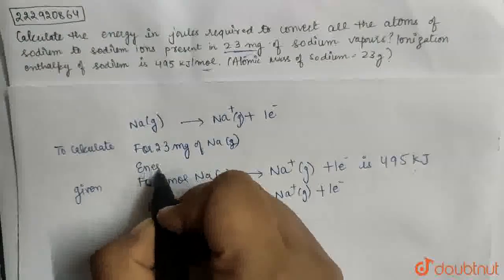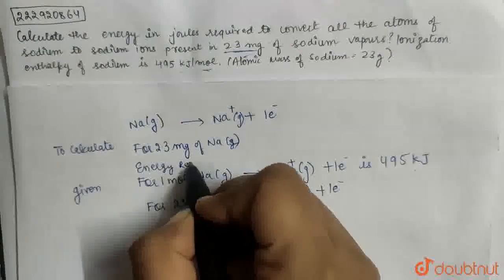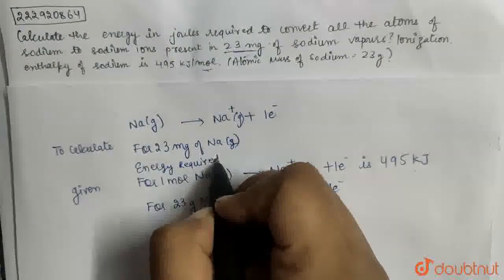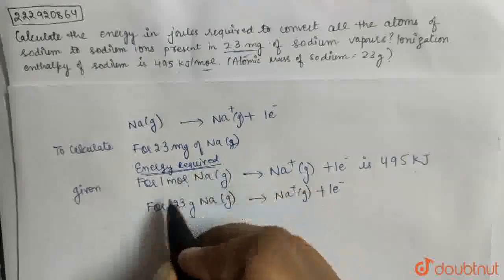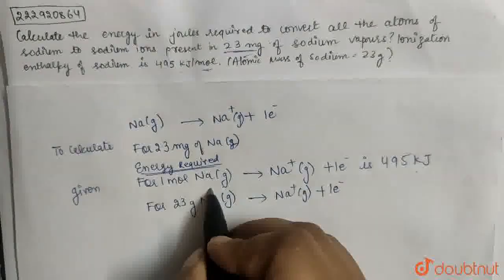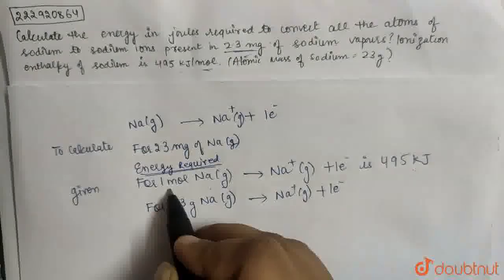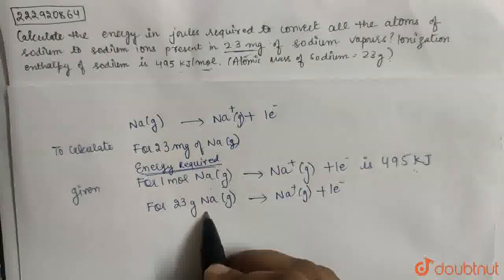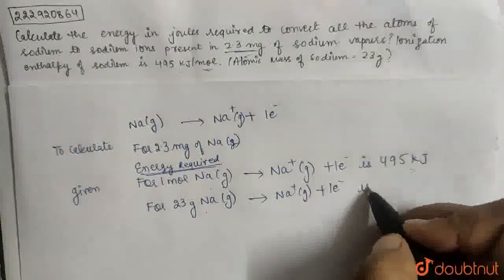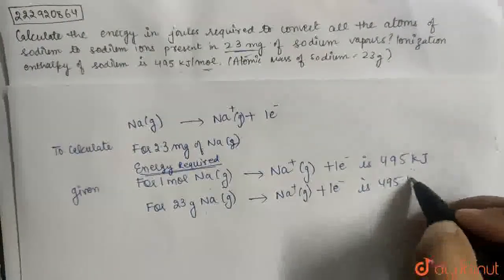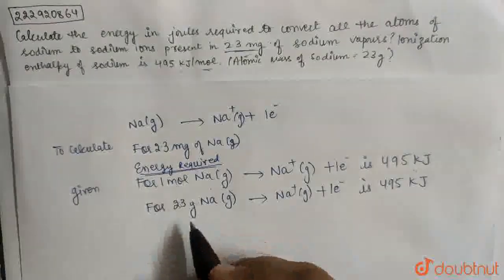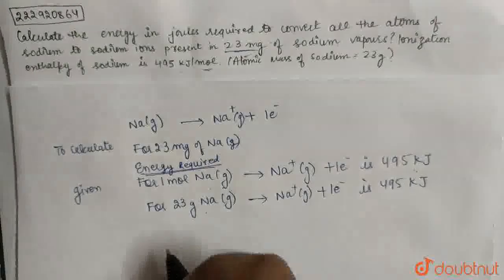Now, I can write for 1 mole of sodium. So what is the reason I can write for 1 mole of sodium? This is in kilojoules, because writing 1 mole or writing 23 grams is the same thing.